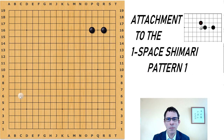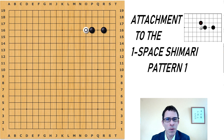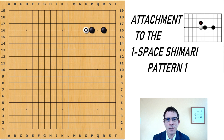Hello, I'm Michael Redmond, Professional 9-Dan Go Player. In this video I'm going to talk about an attachment against the one space corner enclosure. Here we have a black one space corner enclosure, and white will play an attachment against it. This has become a very common move in early stages of the opening because it has been suggested by computer programs and it is quite an effective move in some board positions.